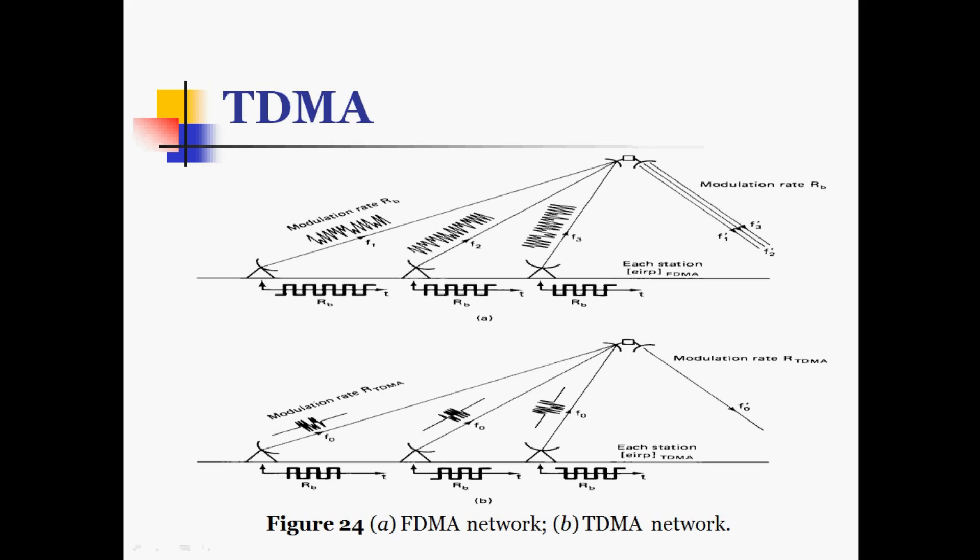In the FDMA network diagram, the modulation rate is RB for various frequencies F1, F2, F3 assigned to respective earth stations. This is the modulation bit rate during transmission from earth station to satellite and back. In the TDMA network diagram, the modulation rate RTDMA is used with the same frequency but different time slots assigned and transmitted to the satellite and then back to the earth stations.